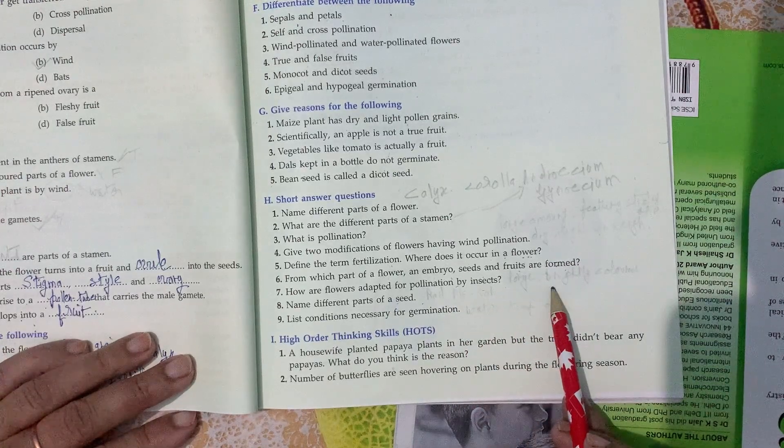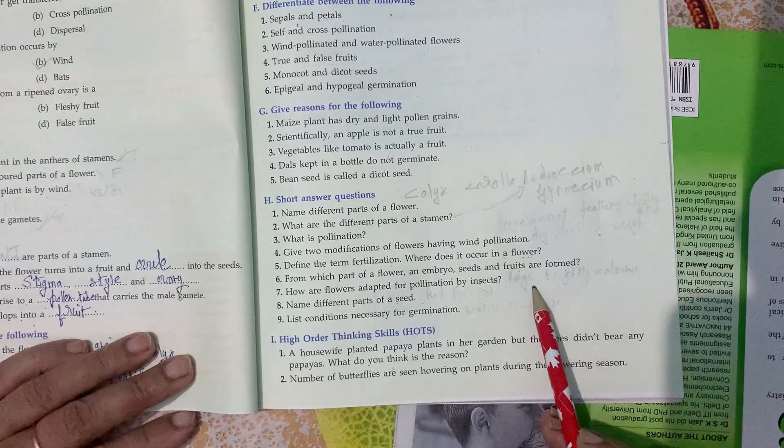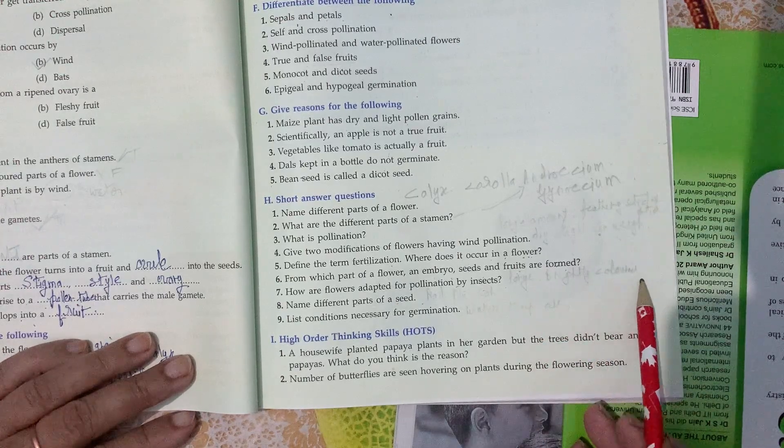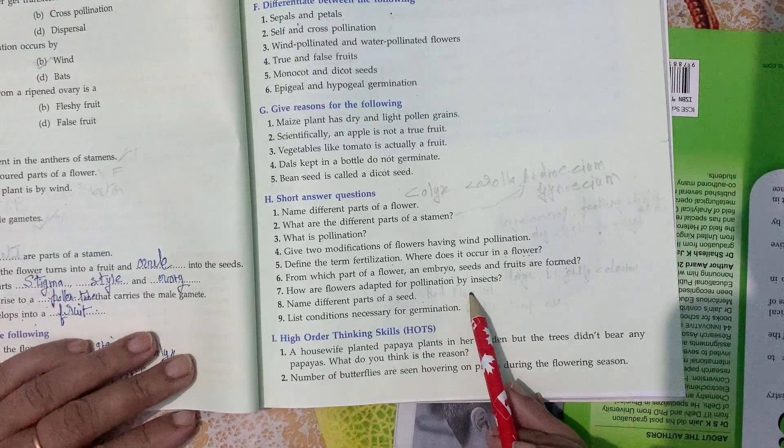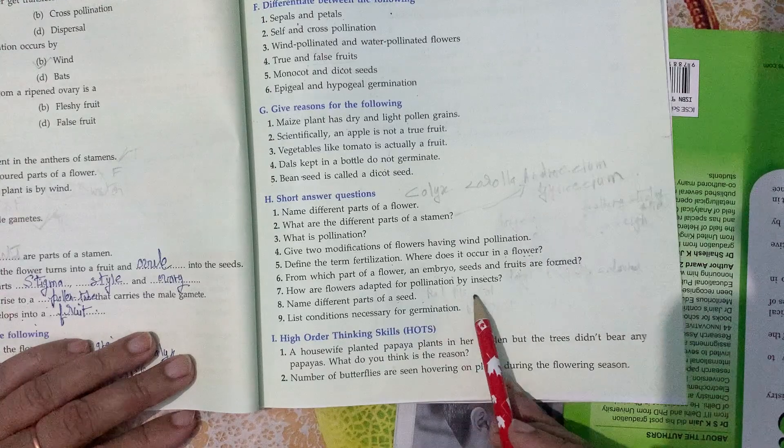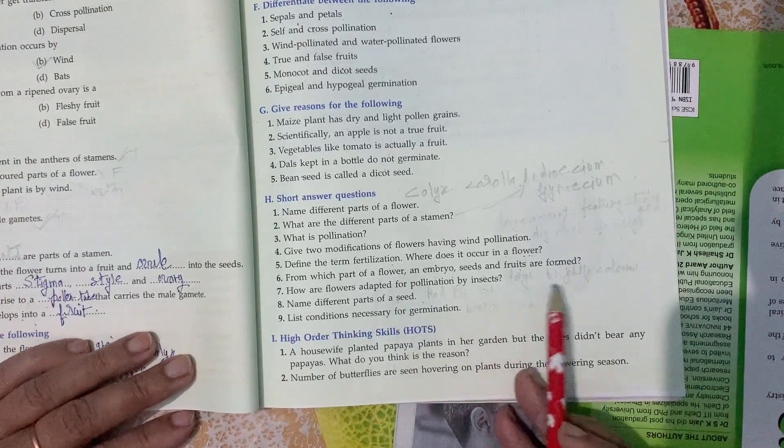How are flowers adapted for pollination by insects? They are large, showy, and have brightly colored petals. Name different parts of a seed. Testa, tegmen, plumule, radicle, and cotyledon are the different parts of a seed.